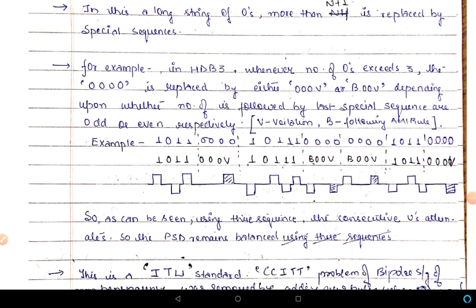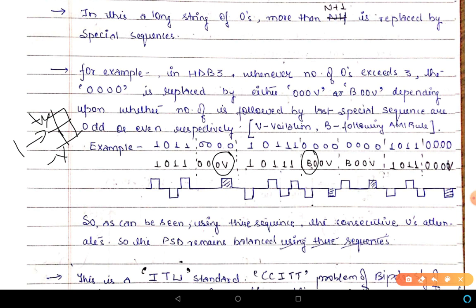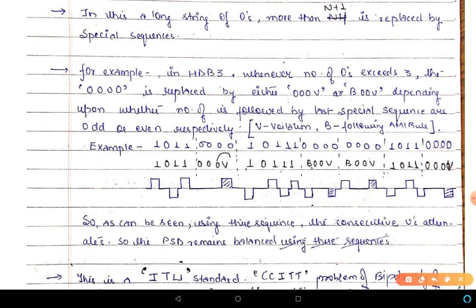When we convert this into electrical representation, the rule is the same as AMI, except: whenever 'V' occurs, we violate AMI, and whenever 'B' occurs, we follow AMI. For a one, we use either +V or −V (alternating); for zero, we use zero volts. 'V' stands for violation — this pulse will not alternate compared to the previous pulse, so both will have the same polarity.